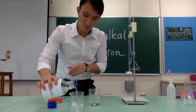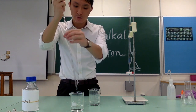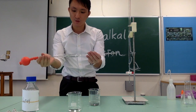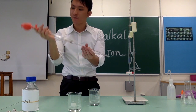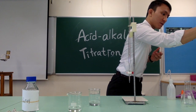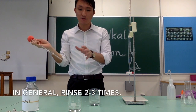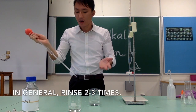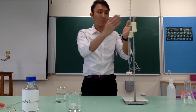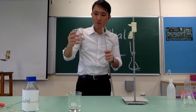Now we rinse the pipette with the solution it will contain — in this case, sodium hydroxide. Add a little sodium hydroxide into a beaker, pour away the first washing, then add a fresh amount and rinse again. In general, we do the rinsing two to three times, but for time's sake I only do it once. Next, let's clean the burette using distilled water — make sure the valve is closed and pour some in.